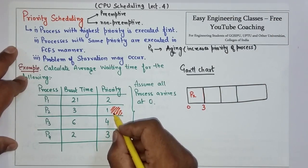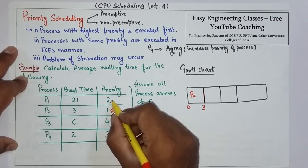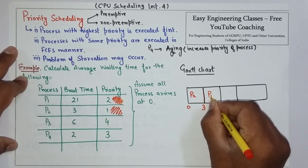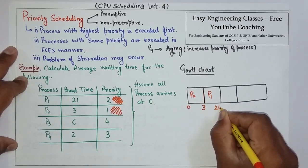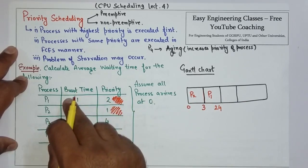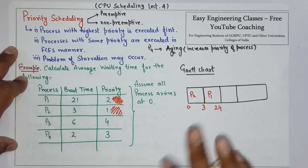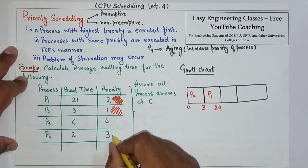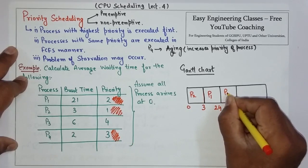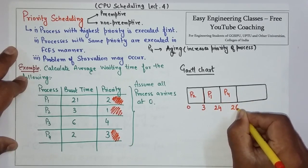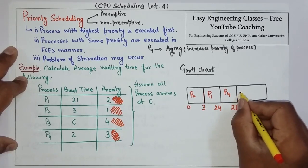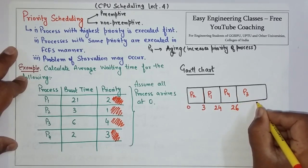After P2, among the remaining processes P2, P4, and P3, P1 has the highest priority so P1 will run next. P1 will run up to time 24 because it started at 3 and has a total execution time of 21, so 3 plus 21 equals 24. Then the priority of P4 is higher than P3, so P4 will run up to time 26. Finally P3 will run and finish at time 32.